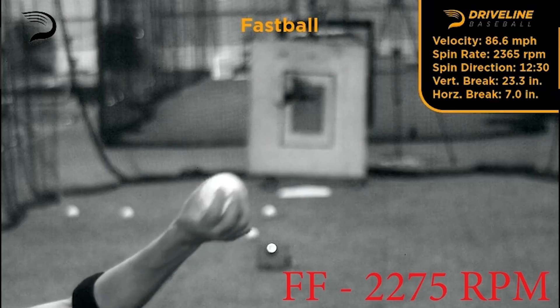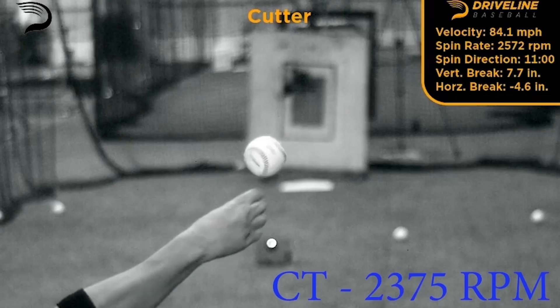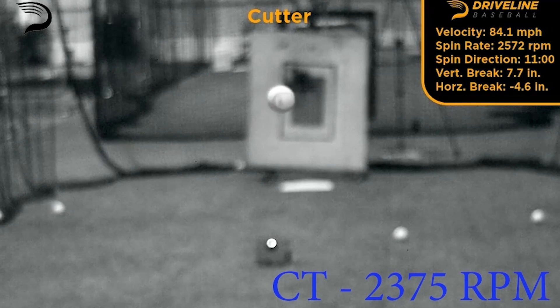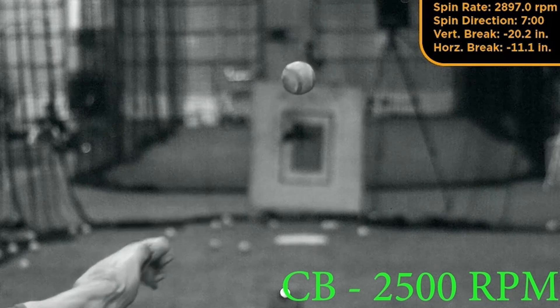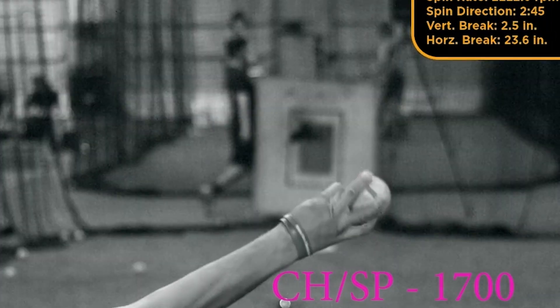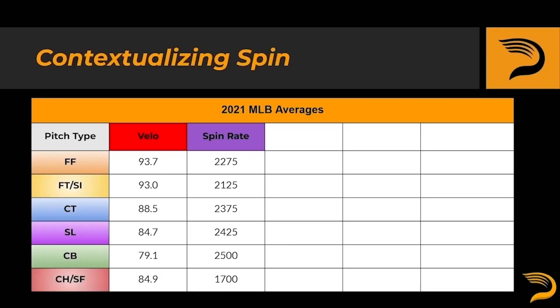Spin rate measures how much the ball is spinning and is the sum of the transverse or useful spin and gyroscopic spin. In 2021, the following pitch types had these spin rate averages: the four-seam fastball at 2,275 RPMs; sinker at 2,125 RPMs; the cutter at 2,375 RPMs; slider at 2,425; the curveball had the highest raw spin rate at 2,500 RPMs; and lumping the changeup and splitter together, those pitches averaged 1,700 RPMs over the 2021 season.